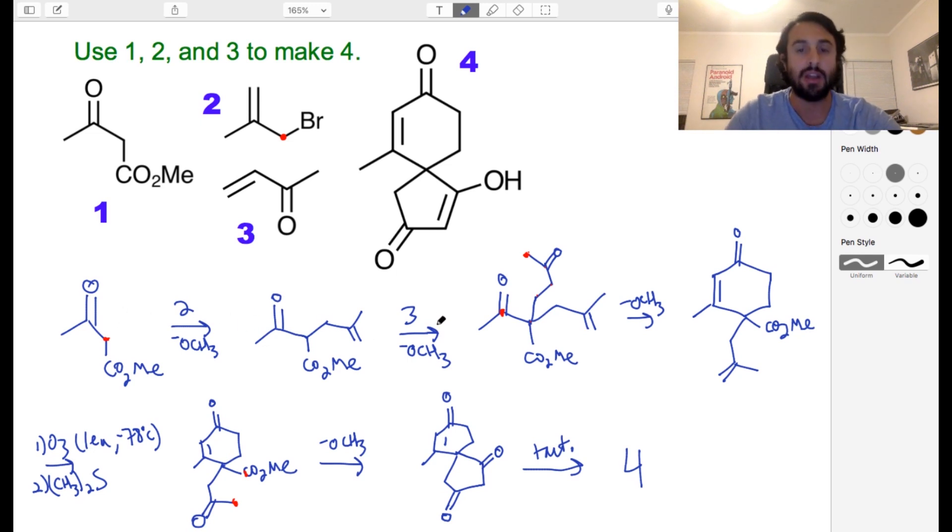We did really an SN2 here and then we did a Michael addition, then we did an intramolecular aldol condensation. Then we got sneaky and we did this ozonolysis with very mild conditions to get the carbonyl here without tampering with this pi bond there. Then one more intramolecular enolate chemistry attacking that ester and we've gotten to our product. That was a bit of a fun one.